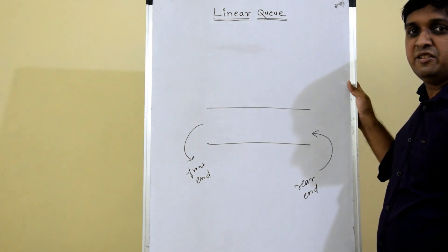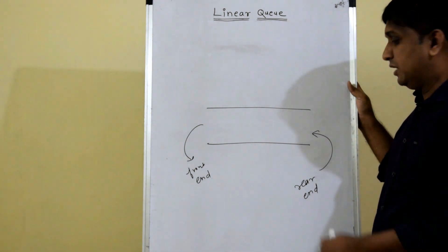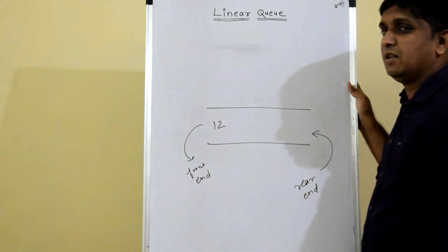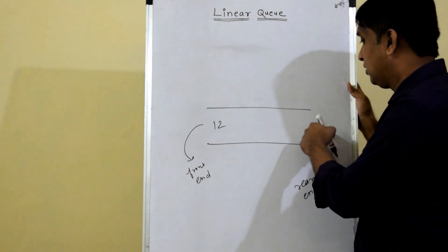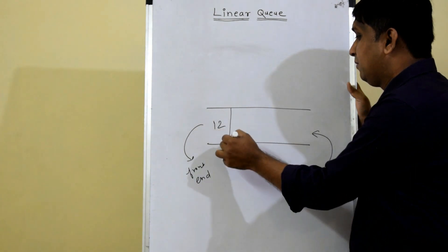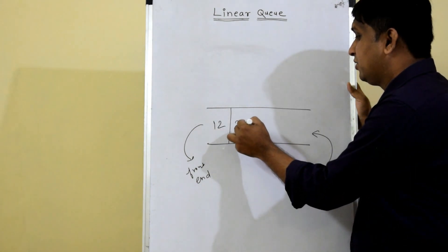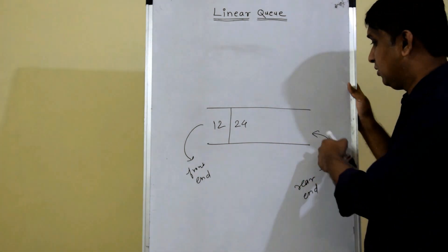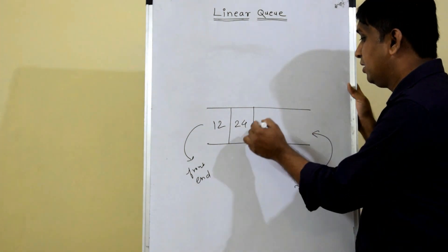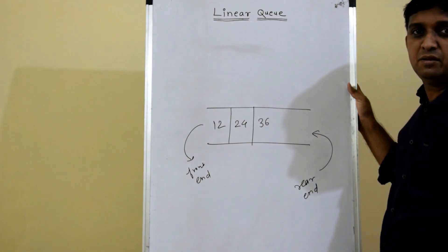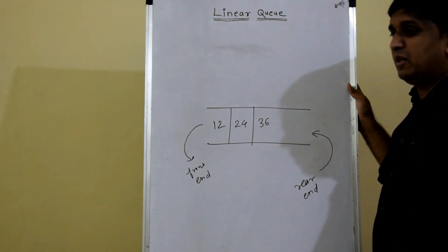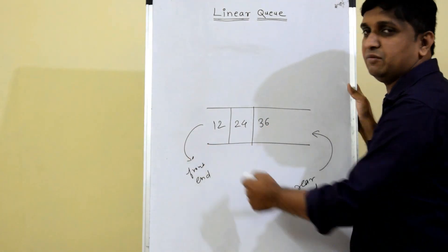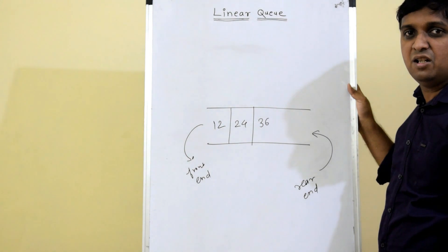Suppose I insert the first element 12 — it will go from the rear end and be stored there. If I insert second element 24, it will go from the same end and be stored next to the previous element. When I remove elements, first 12 will come out, then 24, then 36. That's why it is called First In First Out.